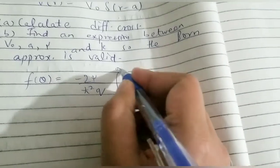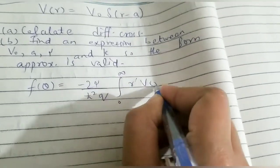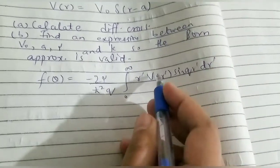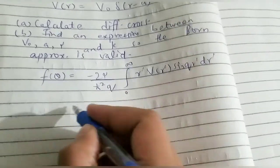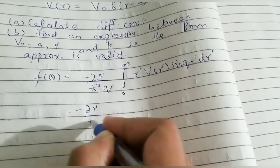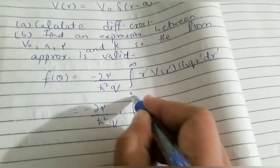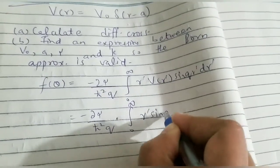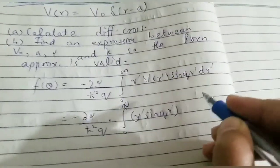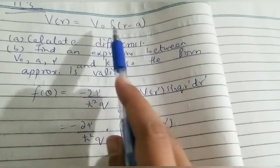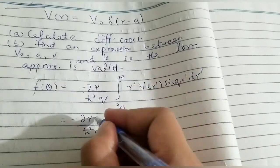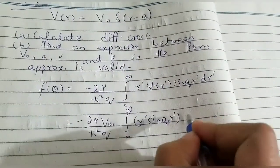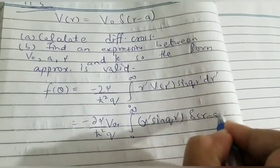...times the integral from 0 to infinity of r-prime times V(r-prime) times sine(q r-prime) dr-prime. We now put the value of V(r-prime) — that is V naught times the delta function — into the integrand. V naught is a constant so it comes outside the integral, and the delta function remains inside.